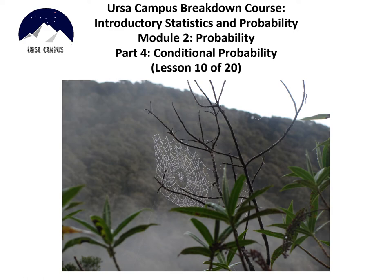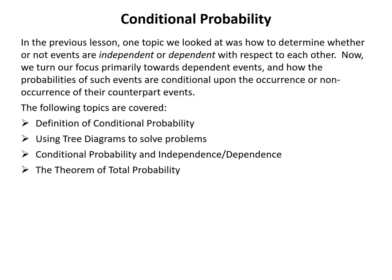Hello and welcome to lesson 10 of 20 in the URSA Campus breakdown course on introductory statistics and probability. This is module 2, probability part 4: conditional probability. The following topics are covered: the definition of conditional probability, using tree diagrams to solve problems, conditional probability and independence and dependence, and the theorem of total probability.